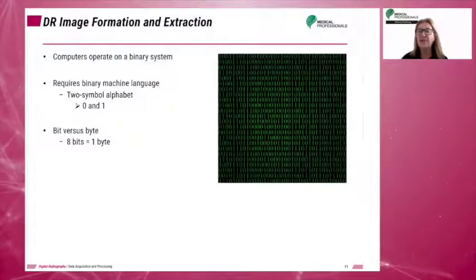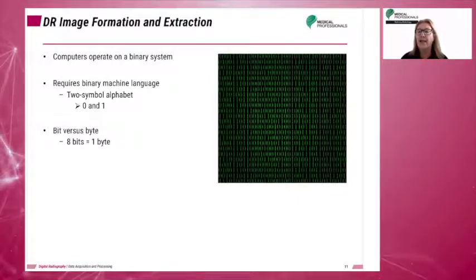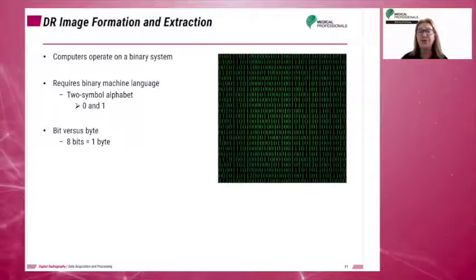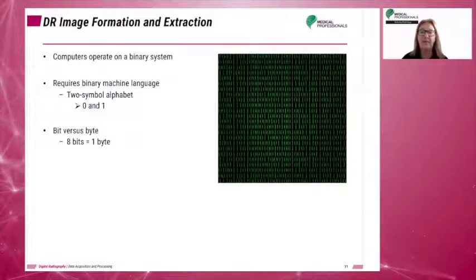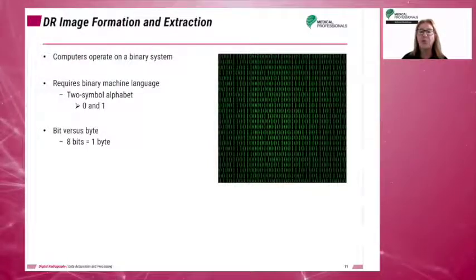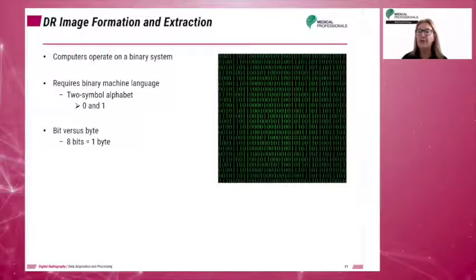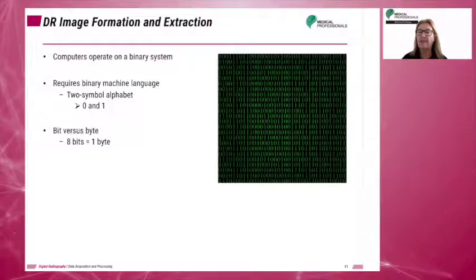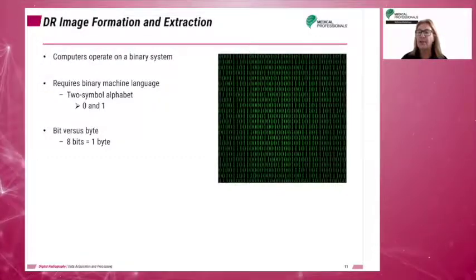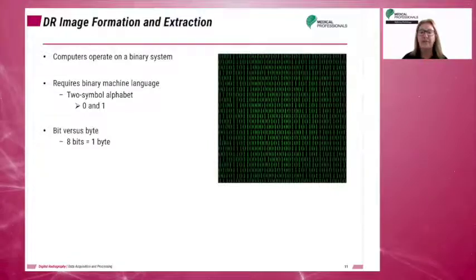Regarding digital image formation: a computer operates on a binary system and uses a two-symbol alphabet — zero for off and one for on. Each binary number is called a bit, short for binary digit. Eight bits equal one byte. Computer memory is rated in terms of total bytes; for example, a 10 megabyte hard disk will store 10 million bytes of information. Computerized digital images are described in terms of the number of values displayed per image.